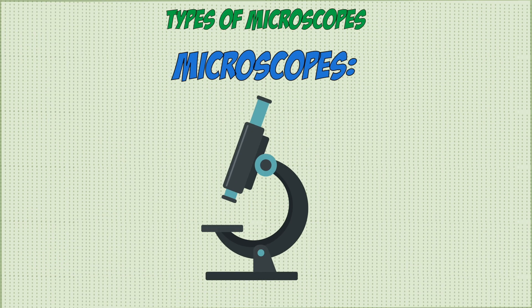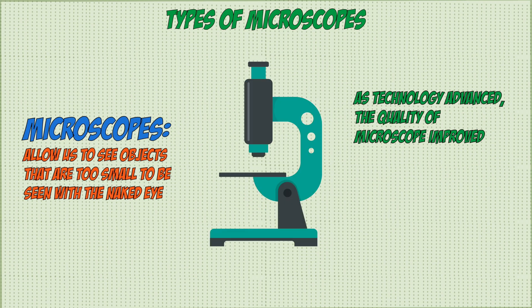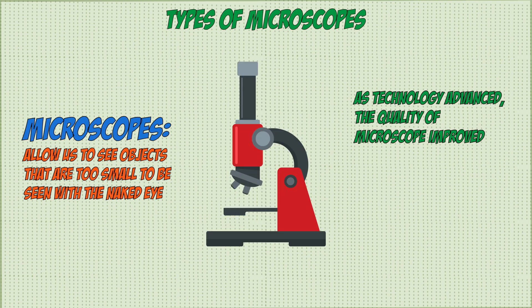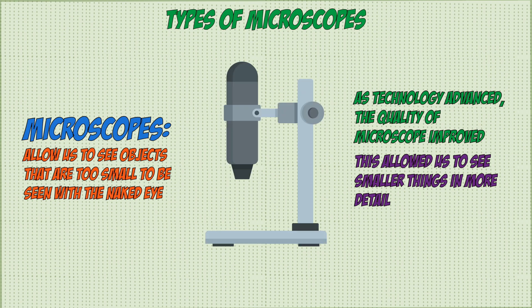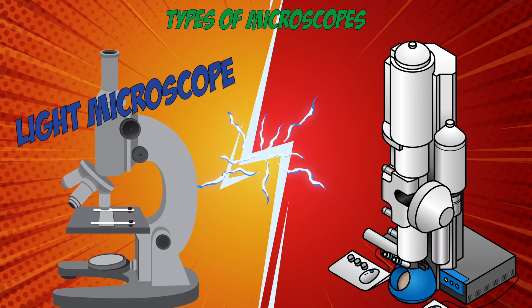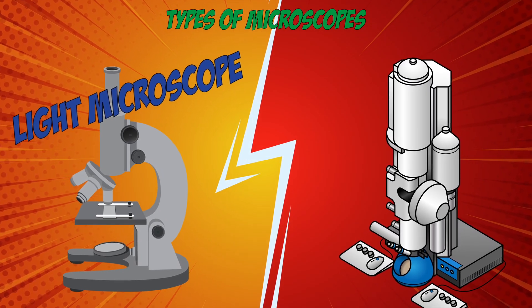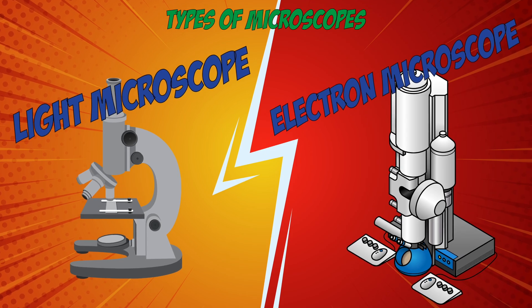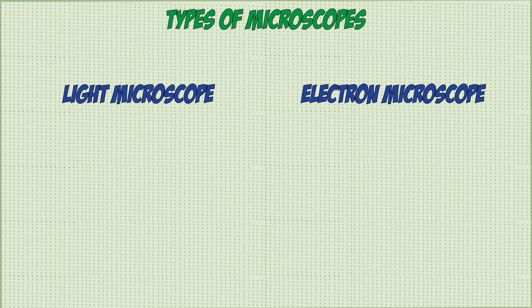Microscopes are tools that allow us to view objects too small for the naked eye. As technology has advanced, the quality of microscopes has improved, allowing us to see things even tinier and in greater detail. There are two main types: light microscopes, developed in the 17th century, and electron microscopes, developed in the 1930s. Both are very different from each other.